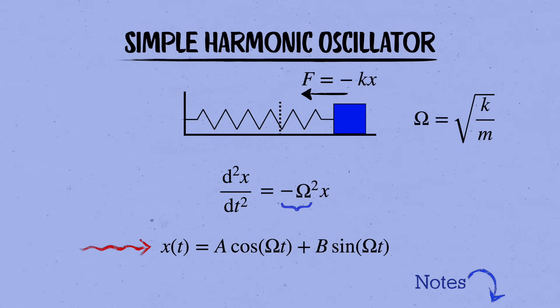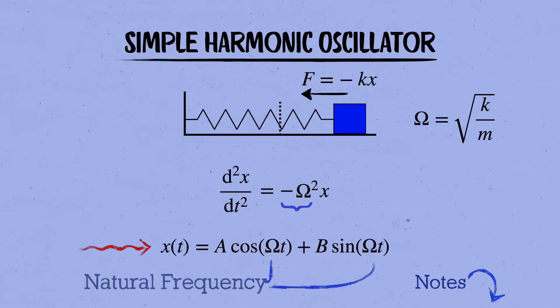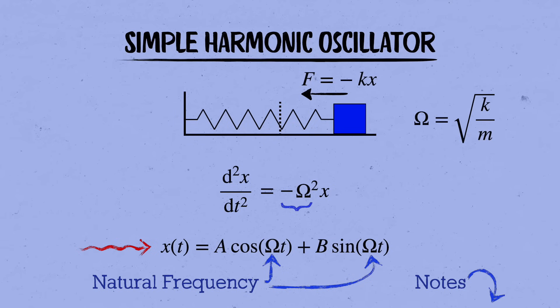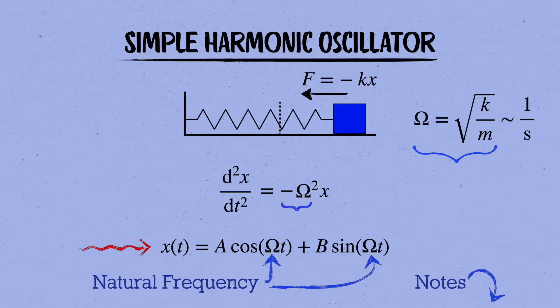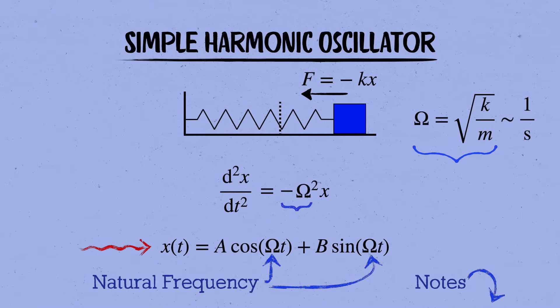So we indeed find that the block sinusoidally oscillates back and forth around its equilibrium position in simple harmonic motion. The rate at which it oscillates is determined by omega, which we therefore call the natural frequency of the system. You should check that it indeed has units of 1 over seconds, as appropriate for a frequency. And notice that you don't get to pick omega. It's fixed by the stiffness of the spring and the mass of the block. And however you set the block moving, it'll always oscillate at this same rate, unless you do something like kick it so hard that it breaks the spring or crashes into the wall.